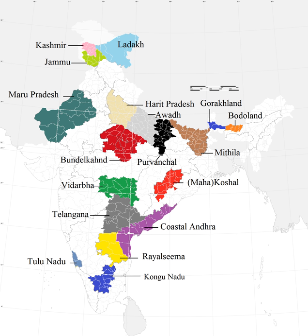There have been demands for a Bojpur state, comprising the Bojpuri-speaking districts of western Bihar, eastern Uttar Pradesh, and northern Chhattisgarh and Jharkhand.